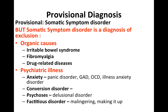In terms of your provisional diagnosis, somatic symptom disorder would be your provisional diagnosis. However, somatic symptom disorder is a diagnosis of exclusion, excluding organic and psychiatric illnesses. Organic causes include irritable bowel syndrome, fibromyalgia, and drug-related diseases. Psychiatric illnesses include anxiety such as panic disorder, generalized anxiety disorder, OCD, illness anxiety disorder, conversion disorder, psychosis, factitious disorder such as malingering, or making it up.